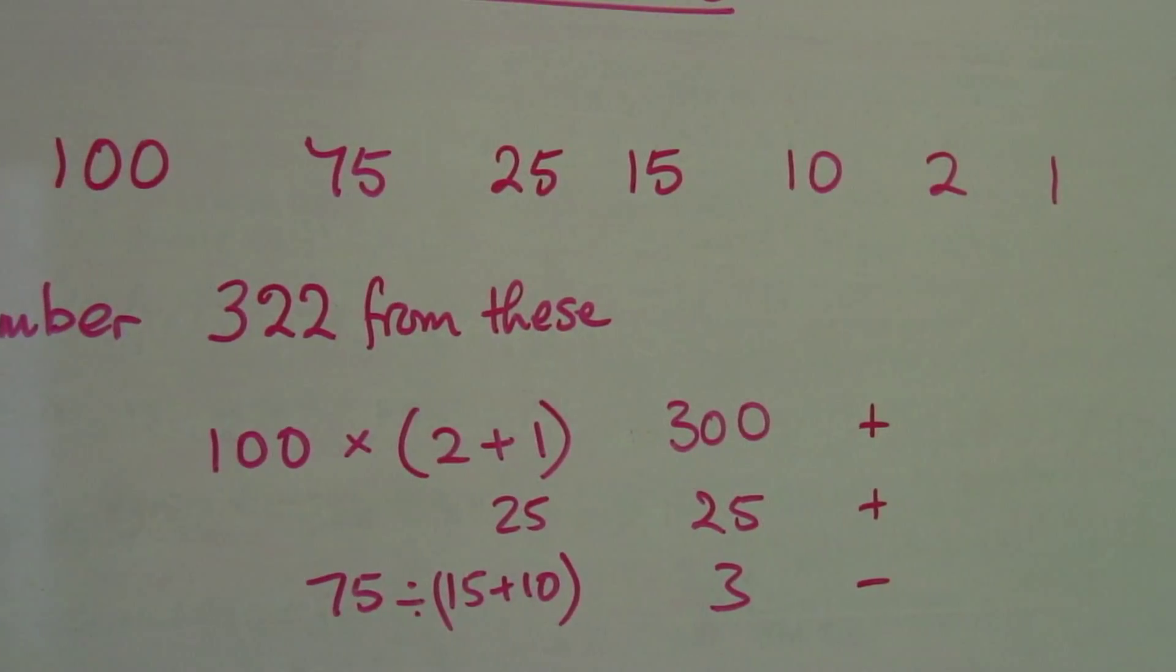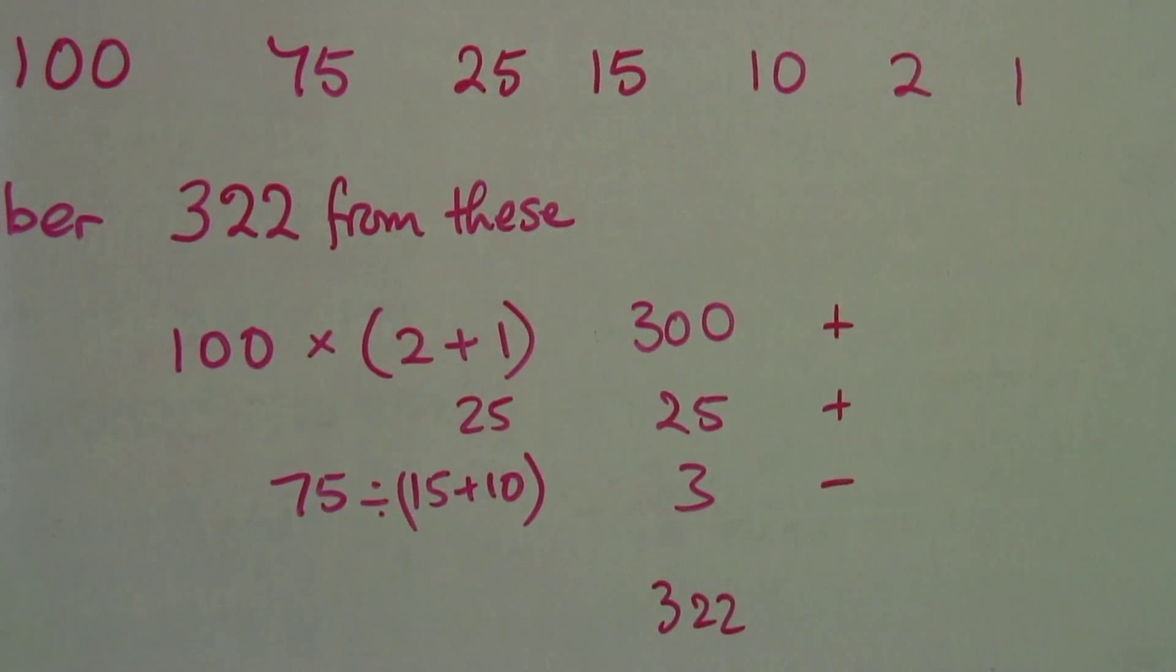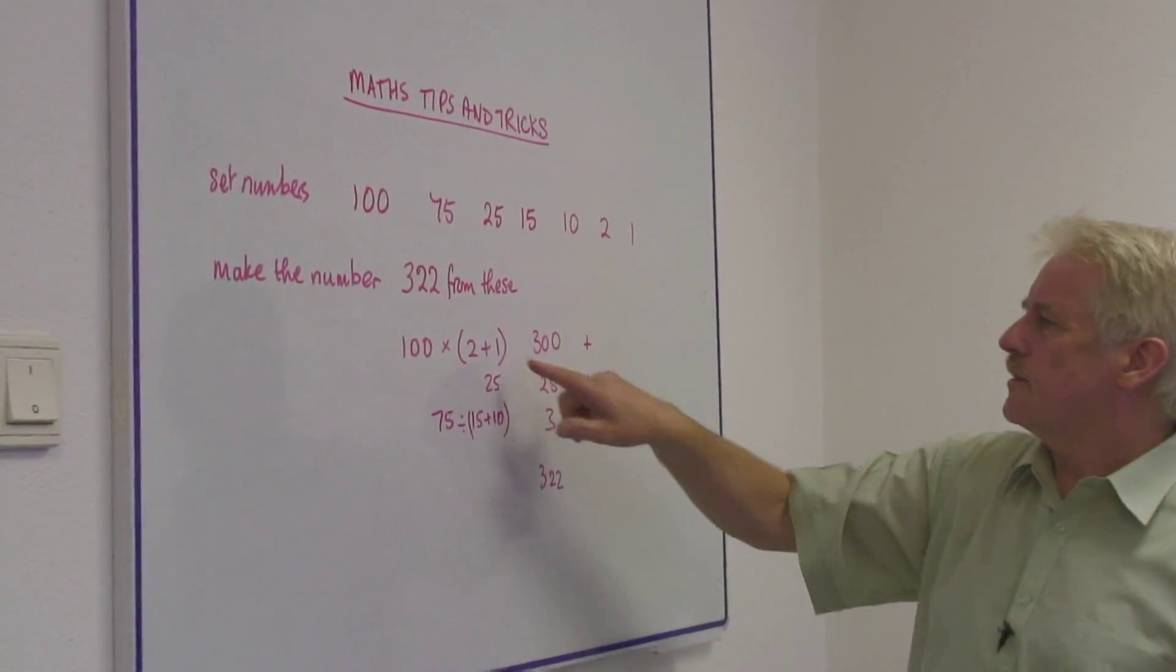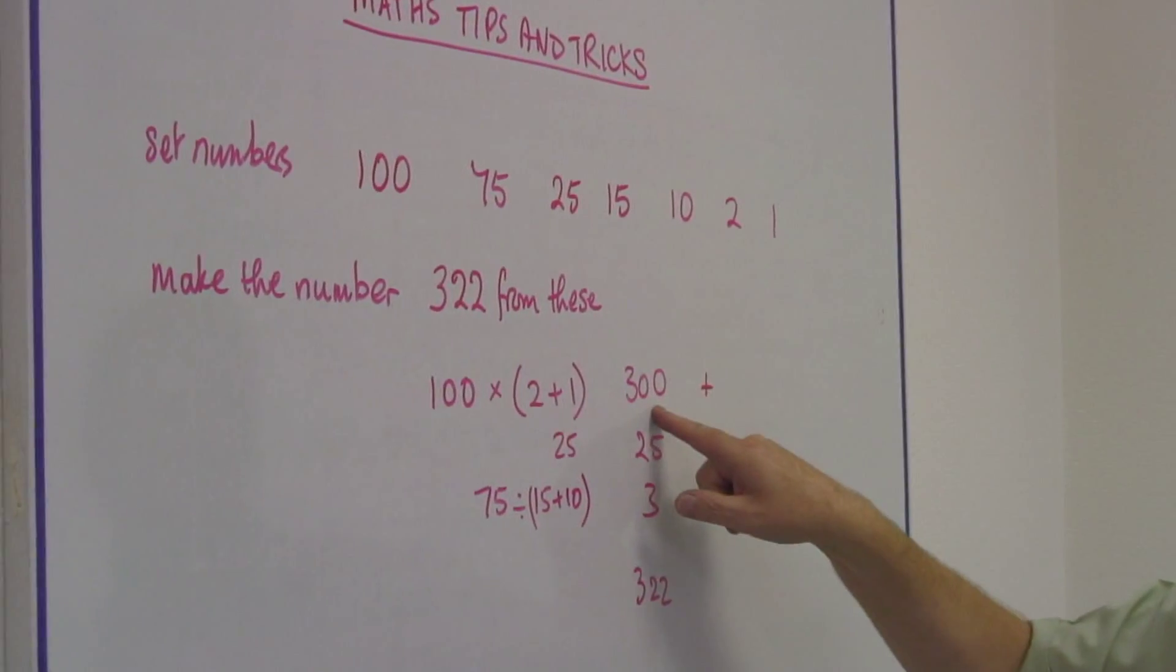Well, I know this one is easy because I can make up 322. A hundred, if I get the 2 and the 1 I get 3, so that's a hundred times 3, three hundred.